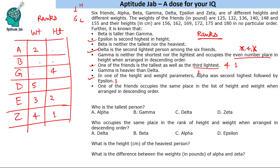Beta is taller than Gamma, so Beta's height rank is better than Gamma's. Beta is neither the tallest nor the heaviest, so Beta cannot be rank 1 in weight. Therefore, Beta gets rank 6 in weight and rank 1 in weight goes to Gamma. So Gamma and Beta's weight ranks are now filled.